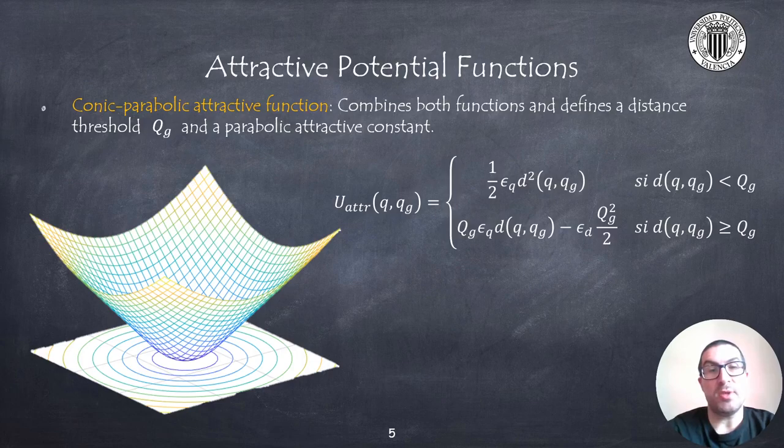In this case, the parameters that define the function are, on the one hand, the distance at which the function changes from conic to parabolic, and on the other hand, the constant of the parabolic function for distance.